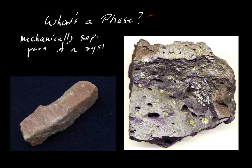Notice that we've introduced this other term here: a system. A system is any part of the universe that you're interested in. It could be the entire earth, or just the atmosphere or the oceans. It could be a single mineral or an entire rock. The system is whatever you are interested in studying — something you define based on the kinds of questions you're asking and the things you want to find out.